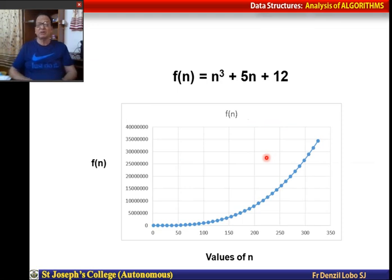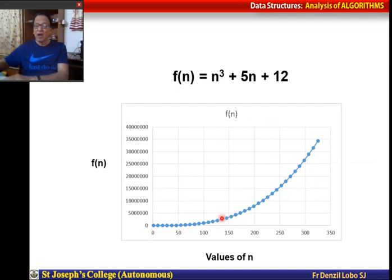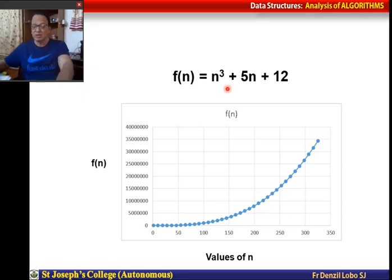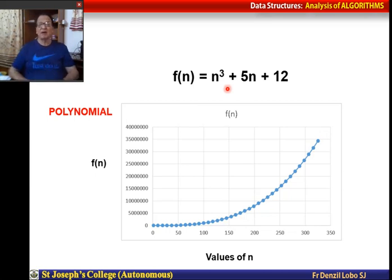This is called logarithmic increase. Here we have another equation: f(n) = n³ + 5n + 12, which is a polynomial equation. Initially it is almost flat, but as the value of n increases, there is a sharp rise in the value of f(n). Similar equations of degree 2 or 3 represent how a given algorithm works.